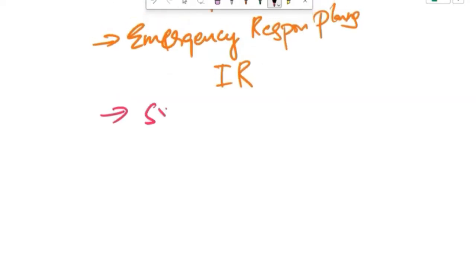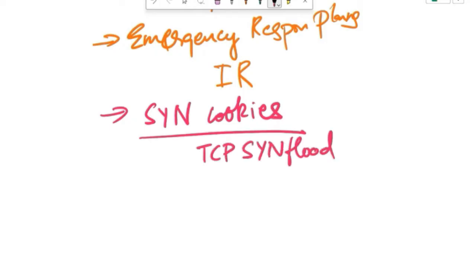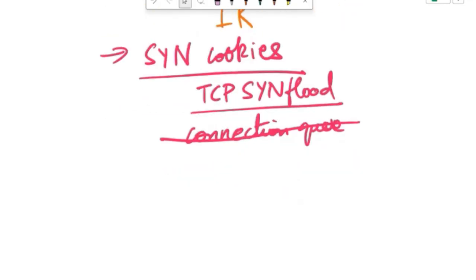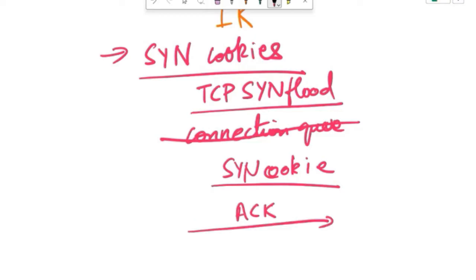Next is SYN cookies. These are cryptographic techniques used to mitigate TCP SYN flood attacks by eliminating the need to allocate resources for incomplete connections. Instead of maintaining a connection queue, the server generates a SYN cookie based on the client's initial SYN packet. This cookie contains enough information to verify the client's request without storing any state on the server. If the client sends an ACK packet with the correct cookie, the server reconstructs the connection state and completes the handshake process. SYN cookies effectively protect against SYN flood attacks by minimizing resource consumption on the server and preventing SYN queue exhaustion.